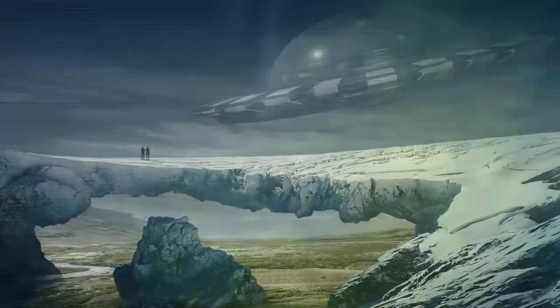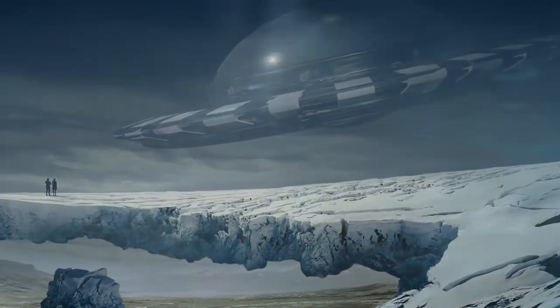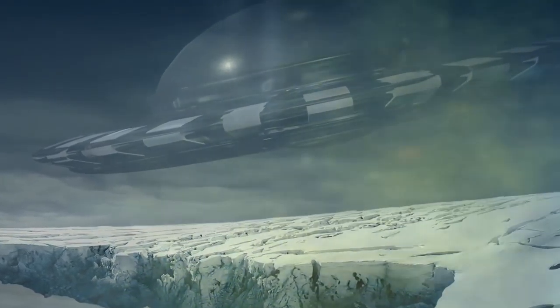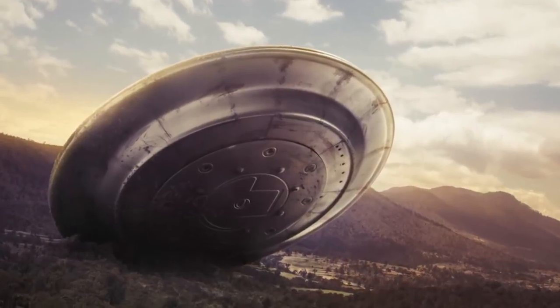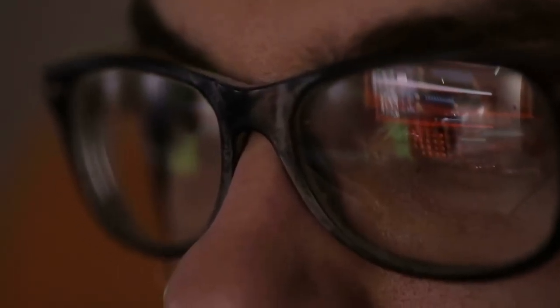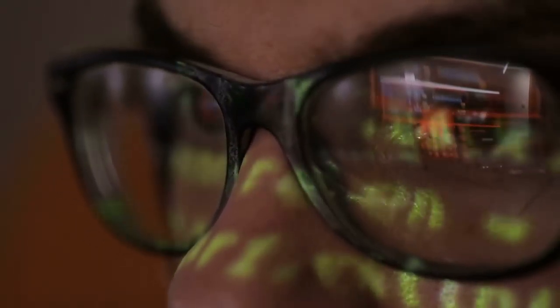He also says that flying saucers are very real, and there's two types: the ones that we built, and the ones that they built. Not only have aliens actually crashed onto Earth, but we've been able to reverse-engineer similar technology using anti-gravity as an energy source.